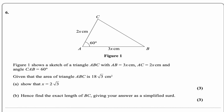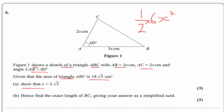Question number six: figure one shows a sketch of triangle ABC with AB = 3x, AC = 2x, and angle CAB = 60°. Given the area of triangle ABC is 18√3, for part (a) show that x = 2√3. Using the sine rule for area: ½ × AB × AC × sin(angle) = ½ × 6x² × sin(60°).